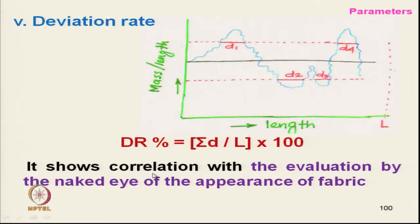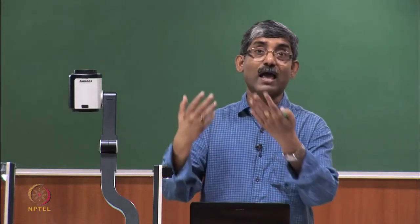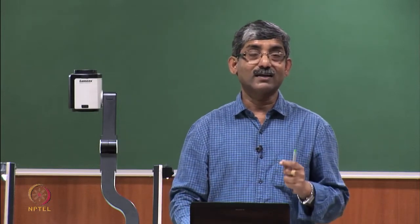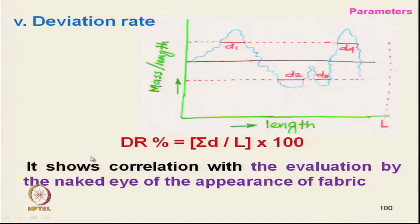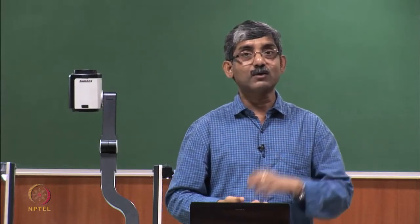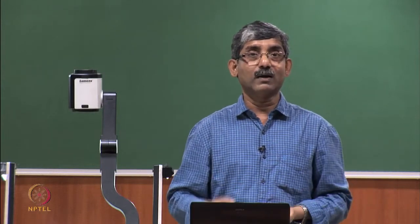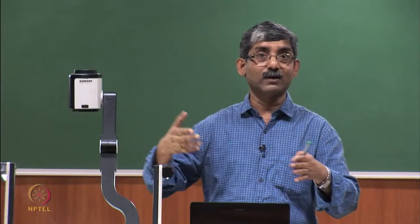DR% shows correlation with evaluation by the naked eye. A higher DR% means the yarn will appear uneven and the fabric will look patchy. While U% only indicates inferior quality in general, DR% gives the total idea of the thick portions that will appear in the fabric's appearance.